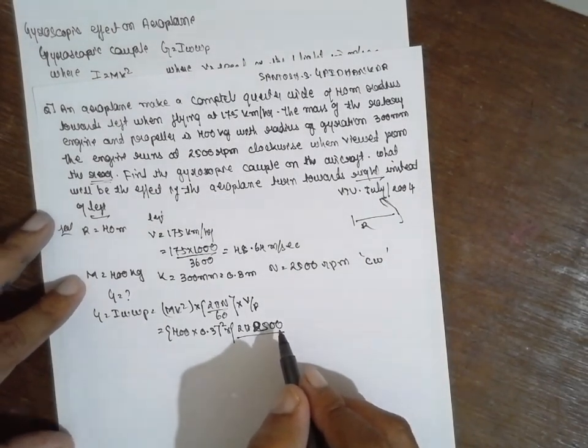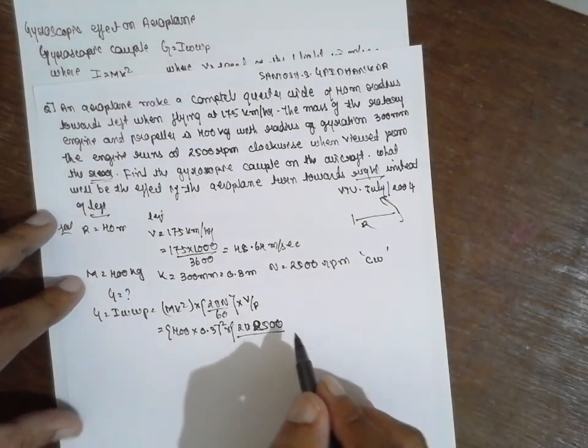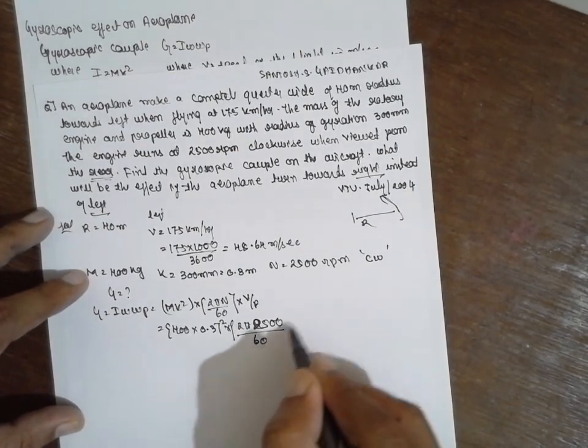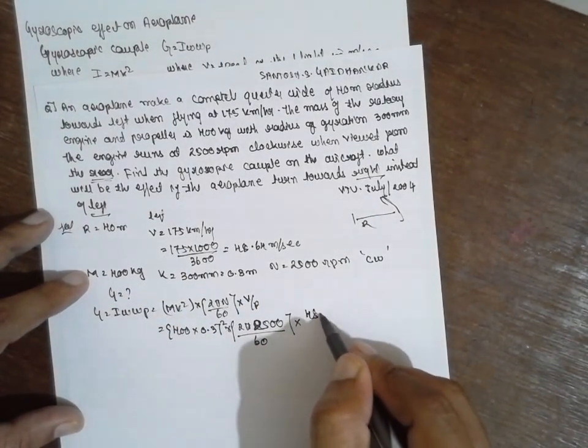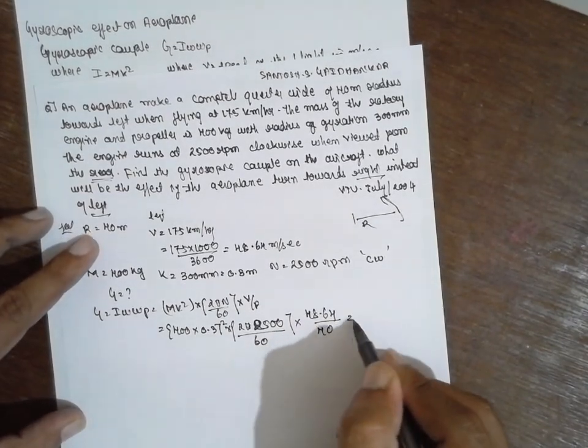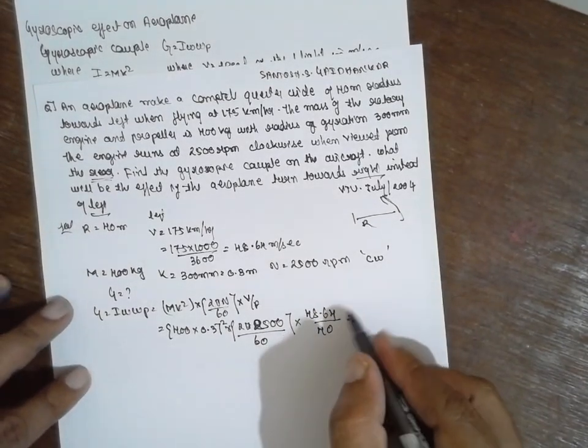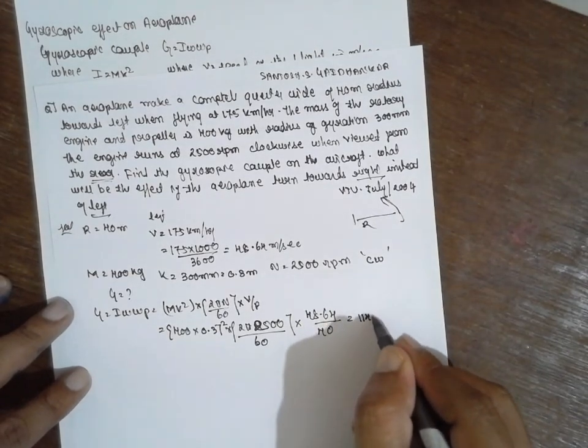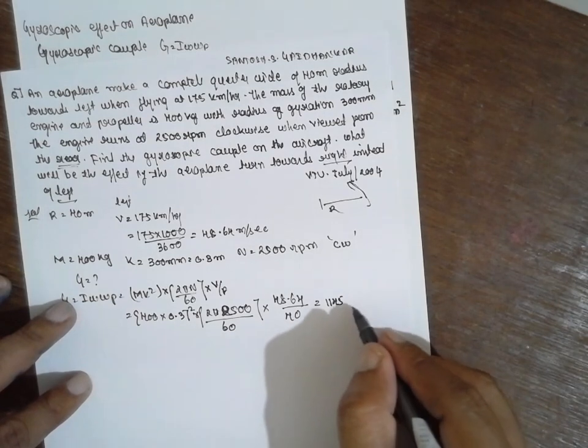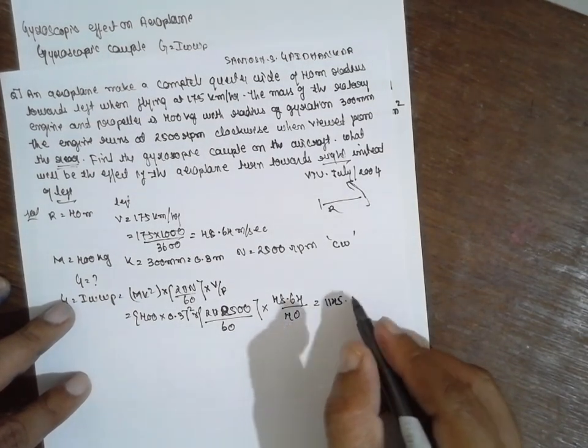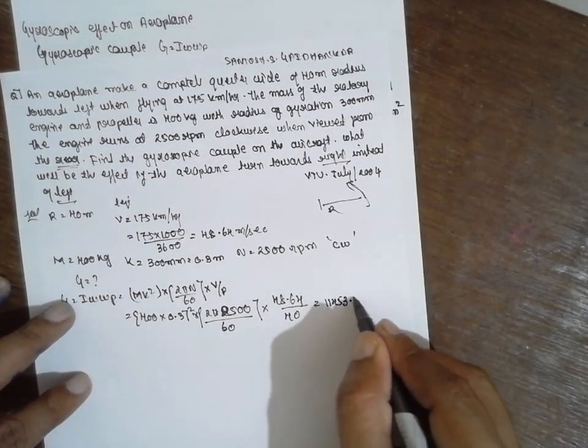V is nothing but 48.64 divided by 40. Answer for this one is 11453.75 Newton meter.